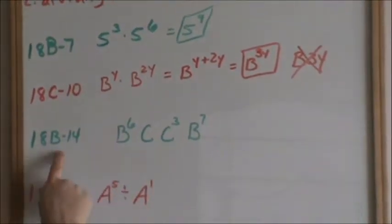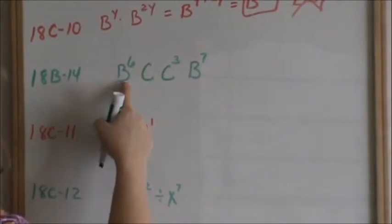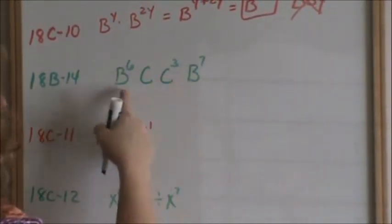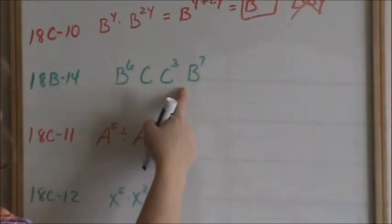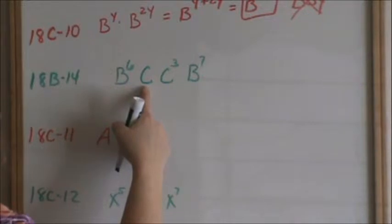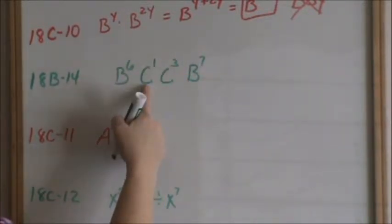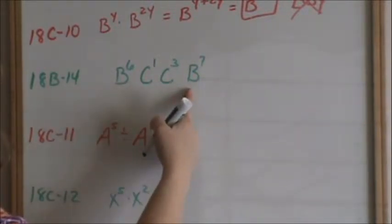Now looking at 18b number 14, you have b to the 6 times c times c cubed times b to the 7. Any time you have letters all together, that implies multiplication. The exponent on this c is an understood 1. You can write a 1 on it if that makes you feel better. Then you can only combine same bases. They have to be the same base in order for you to add your exponent.